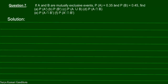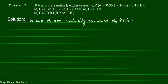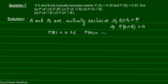In this problem, it is given that A and B are mutually exclusive events and the values for P(A) and P(B) are given; we have to find these probabilities. Since A and B are mutually exclusive, A intersection B is empty, which means P(A∩B) = 0. It is also given that P(A) = 0.35 and P(B) = 0.45.